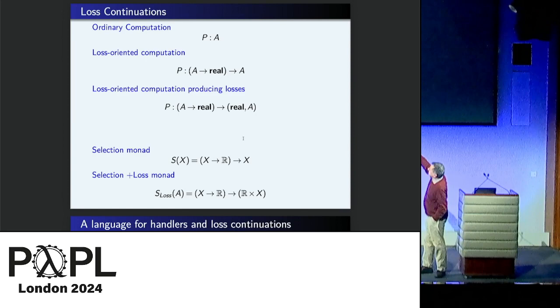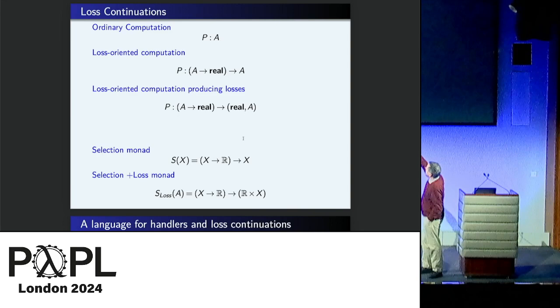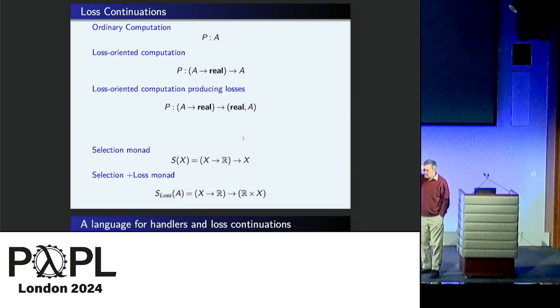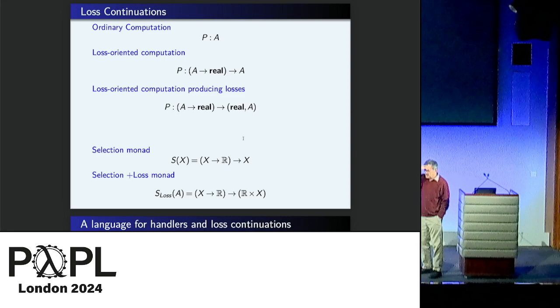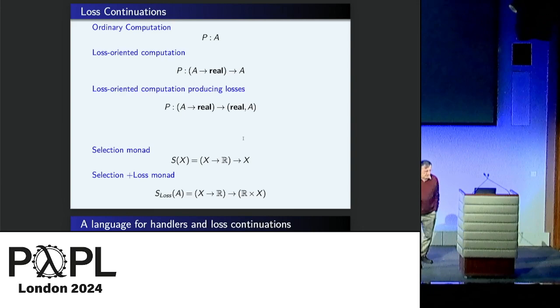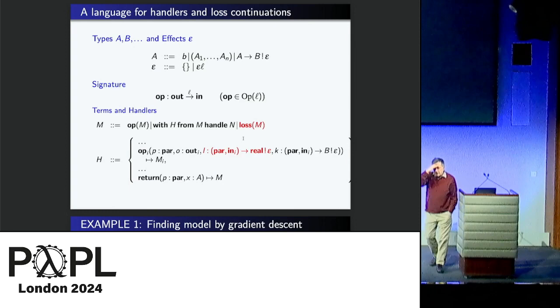So how about the loss continuations? So normally you define something type A. But now we can only give you something of type A if you tell me how much it costs for any given element of A. So our programs are going to be functions from A to real to A. These are the losses. So write that with variables so it becomes mathematics. That's the selection monad. But I won't go into the monadic aspects of it, though they're absolutely fascinating.